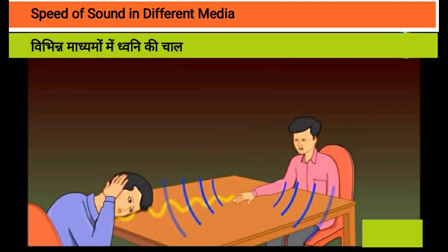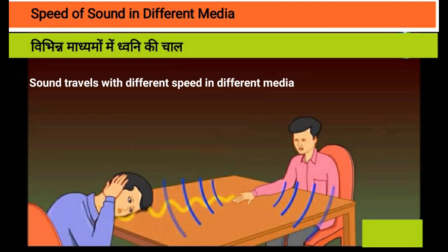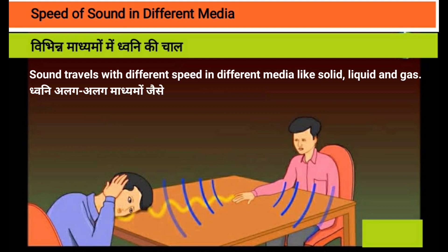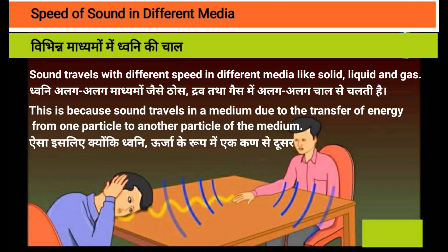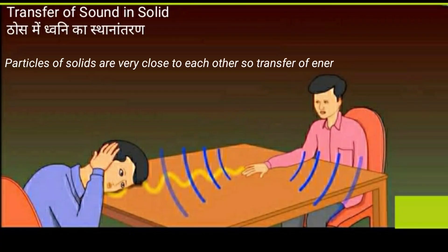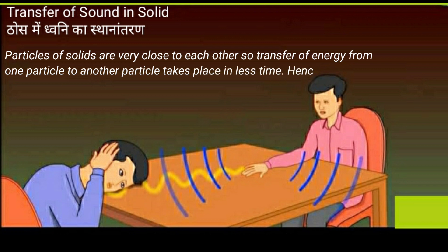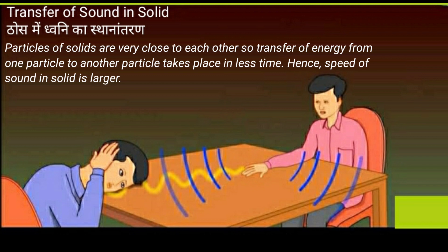Next is speed of sound in different media (vibhinn madhyamon mein dhvani ki chal). Sound travels with different speeds in different media like solid, liquid, and gas. Dhvani alag-alag madhyamon mein jaise thos, drav, tatha gas mein alag-alag chal se chalta hai. This is because sound travels through a medium due to the transfer of energy from one particle to another. Since particles of solids are very close to each other, energy transfer takes less time, hence speed of sound in solid is larger.